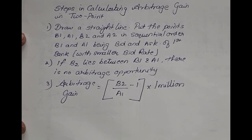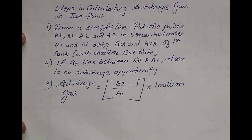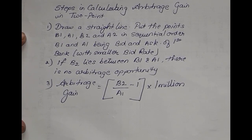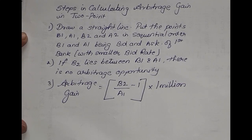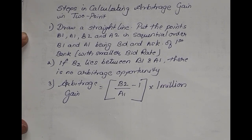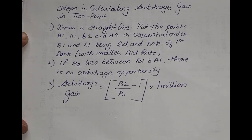Steps in calculating arbitrage gain in two points. Step number one: draw a straight line and put the points b1, a1, b2, and a2 in sequential order. b1 and a1 are the bid rate and ask rate of the first bank — the one which has the smaller bid rate. If b2 lies between b1 and a1, there is no arbitrage opportunity. Otherwise, arbitrage gain is found using the formula: b2 upon a1 minus 1, into 1 million.